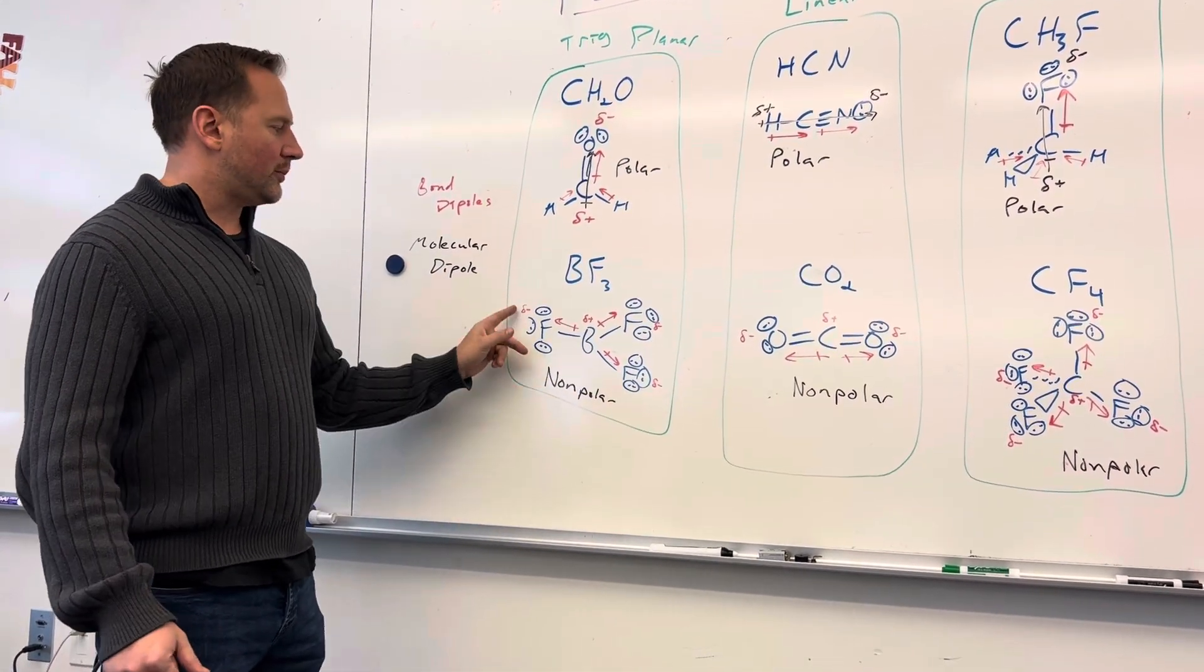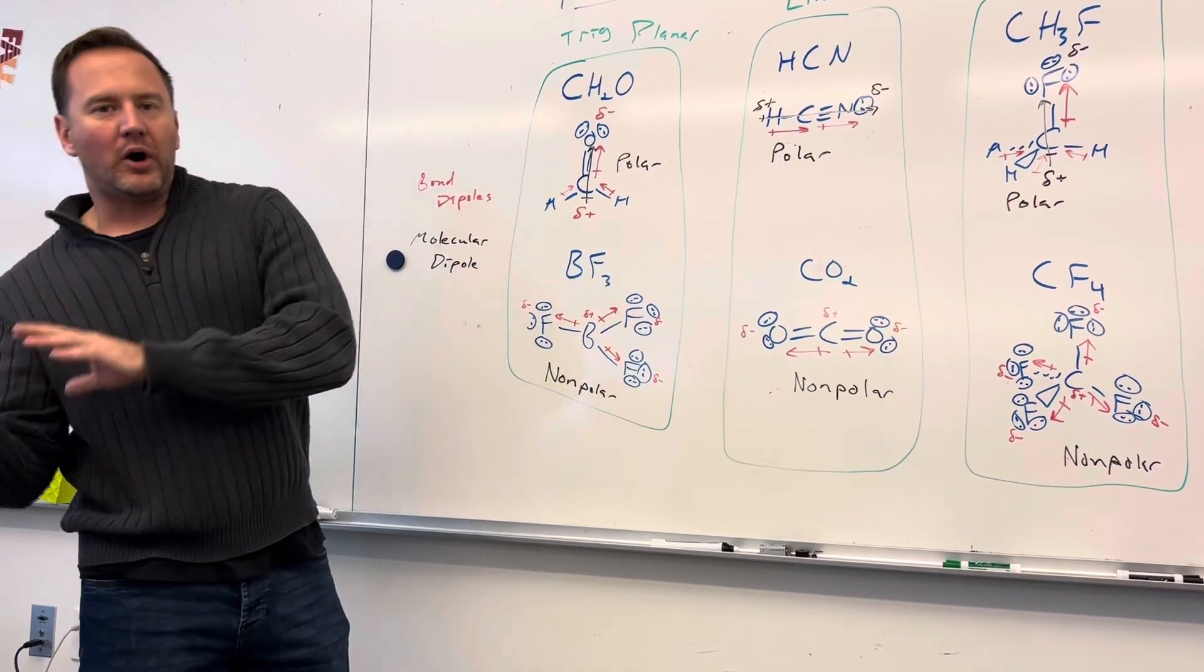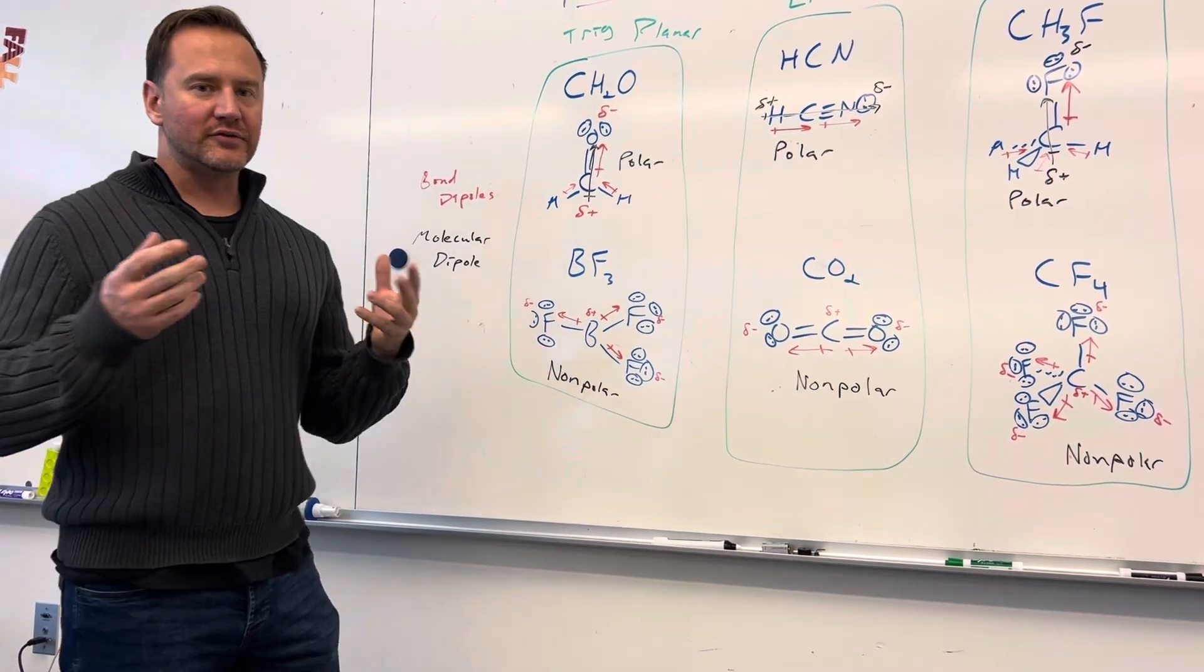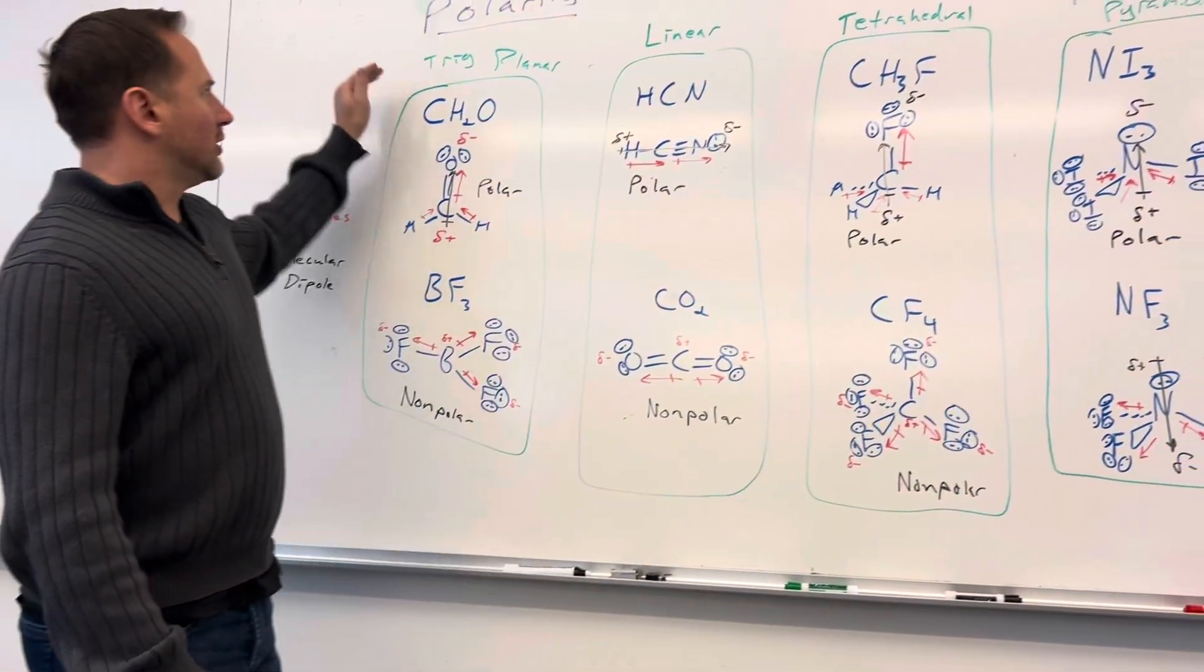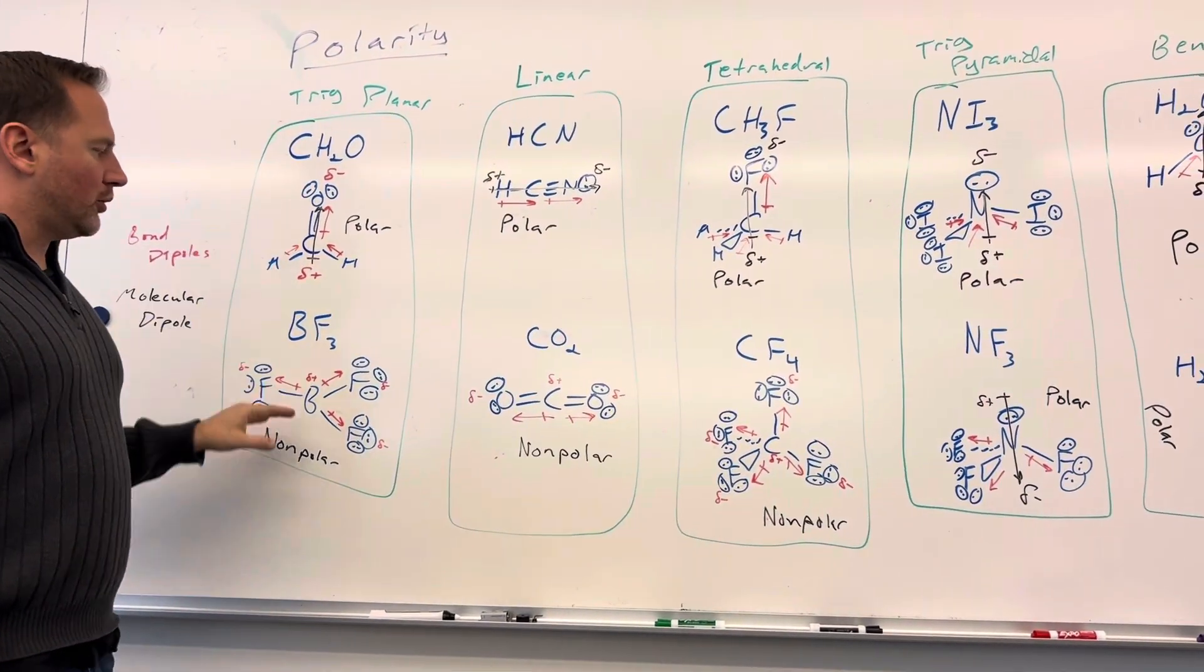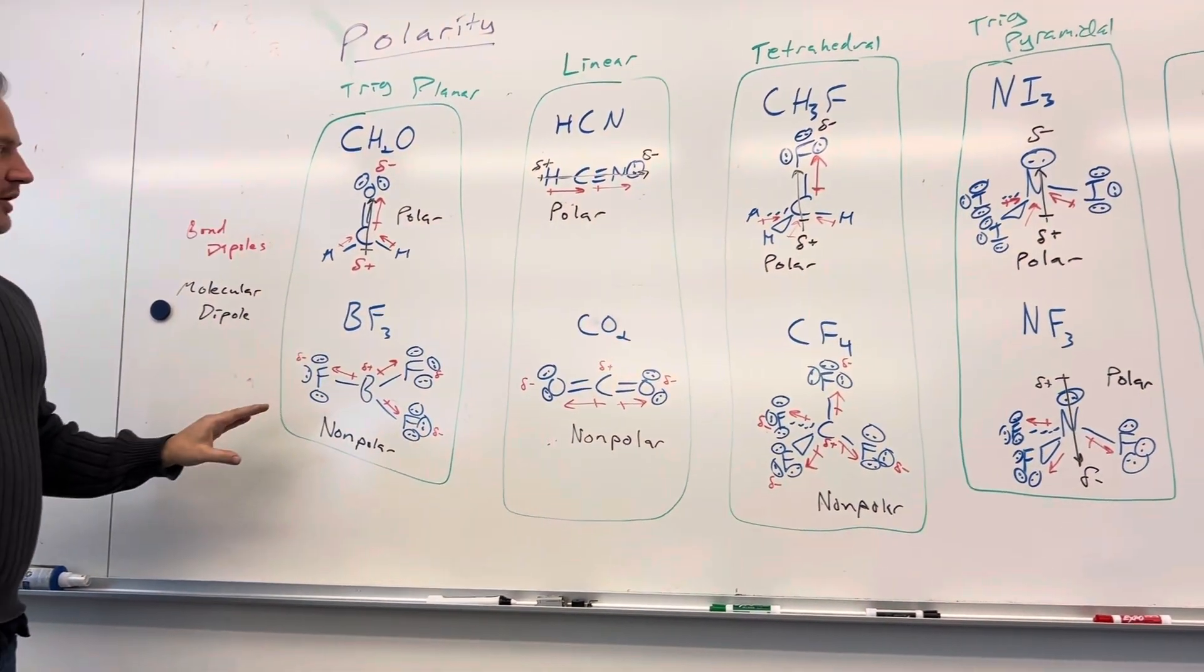And while the fluorines are all partially negative, there's no positive or negative end of this molecule. It's not lopsided. So trigonal planar can either be polar or non-polar, depending on what's bonded to the central atom.